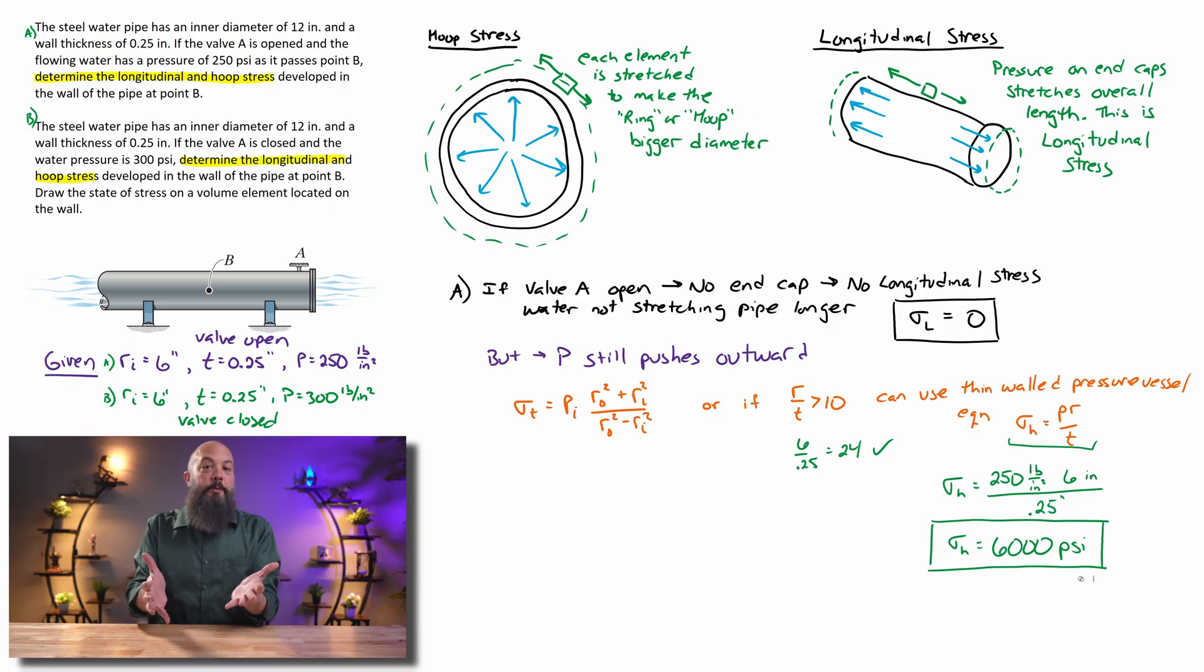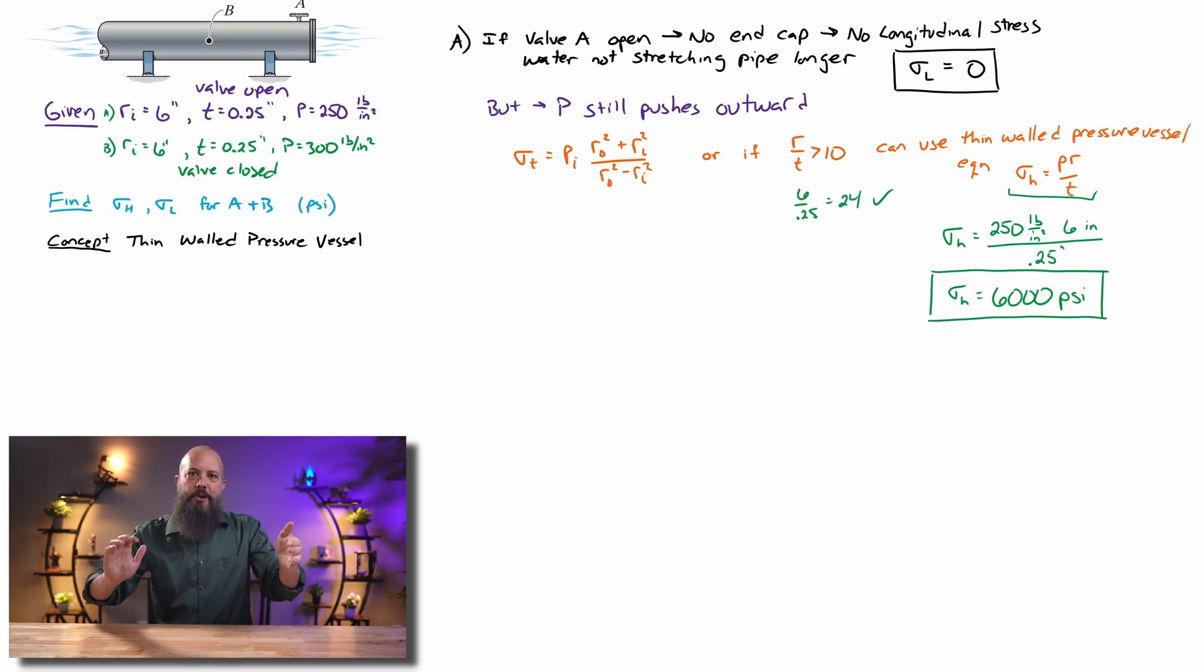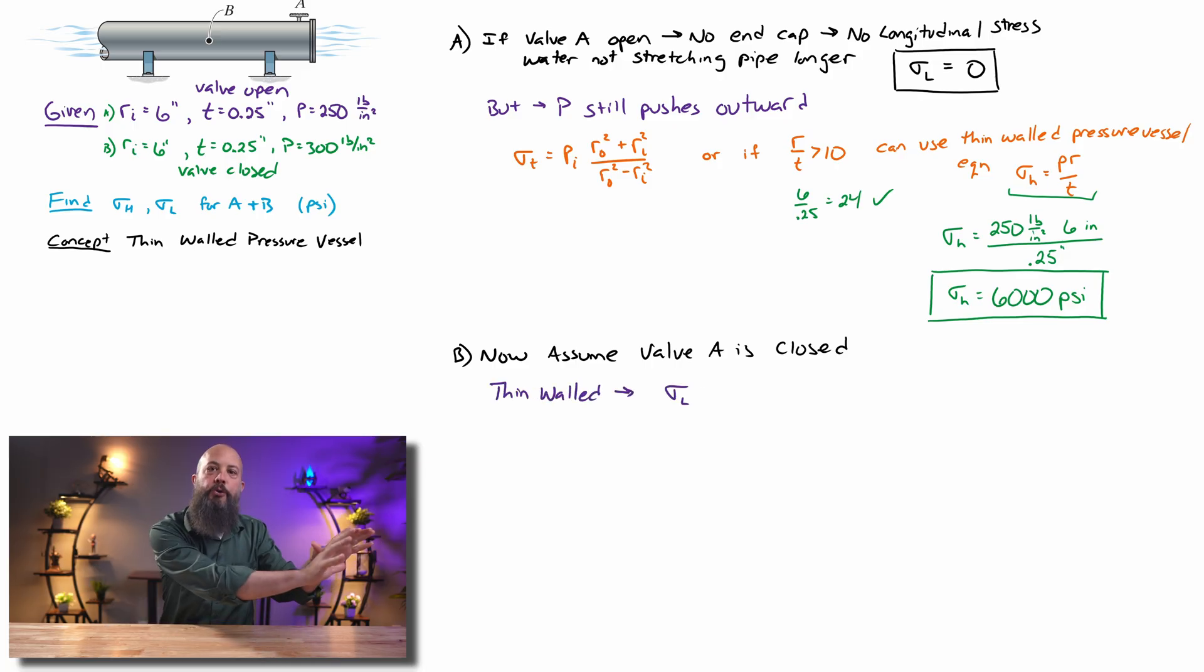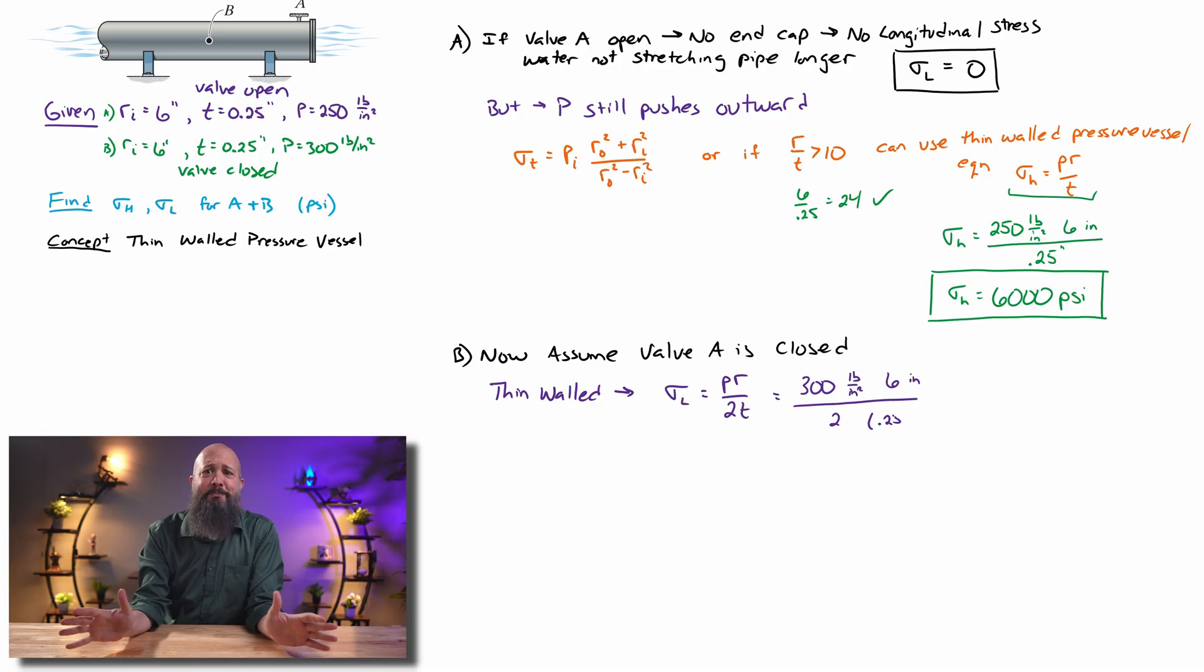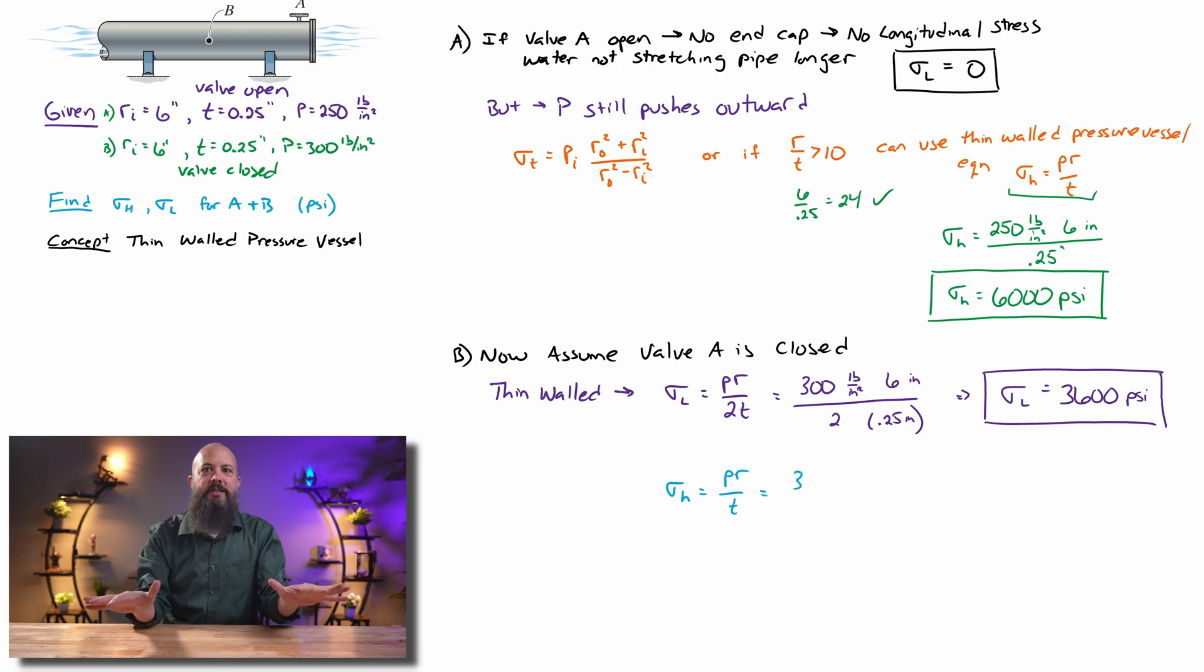Now if we change the problem a little bit, we have an operator actually close the valve so that now the water is pushing up against the edge. So now pressure is pushing outwards, trying to lengthen it because it's trying to push its way through the valve. Now we have to incorporate longitudinal stress as well. Almost as easy: PR divided by 2T this time. We get 3,600 PSI for longitudinal stress.